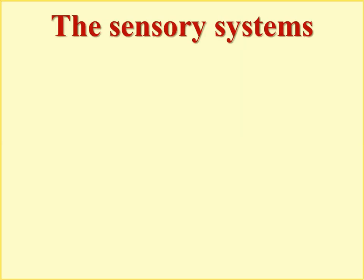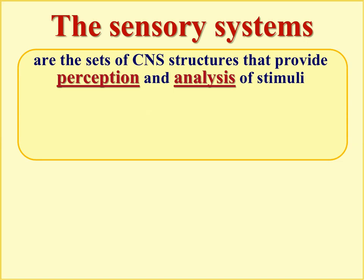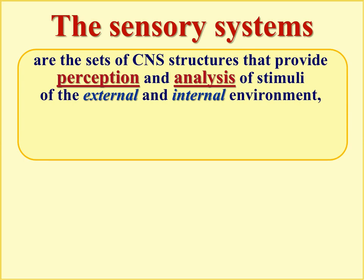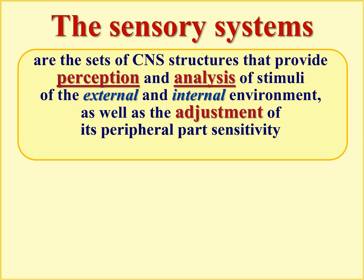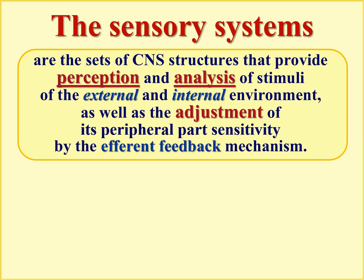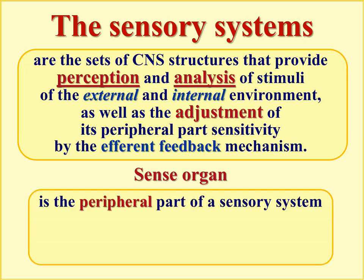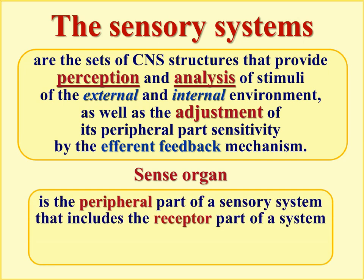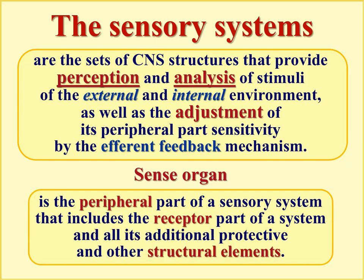We begin with the definition of the sensory system. Sensory systems are sets of central nervous system structures that provide perception and analysis of stimuli of the external and internal environment, and also the adjustment of peripheral part sensitivity by the efferent feedback mechanism. The sense organ is just a part of the sensory system — in particular its peripheral part — which includes mainly receptors but also many other protective or structural elements.